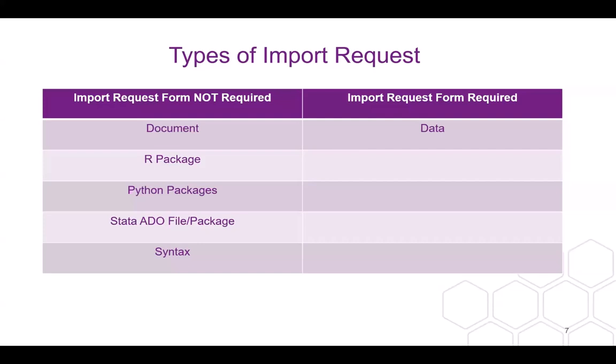You'll put that six-digit number in the import request form if your import requires a form, and you'll also need to put this number in the Zen2 notes section. There are two main types of import requests: those that require a form and those that do not. Those that do not require a form include documents, R packages, Python packages, Stata ADO files or packages, and syntax files.